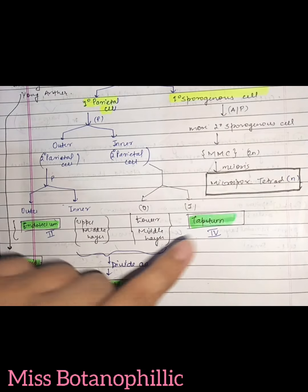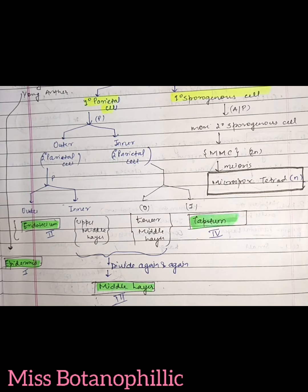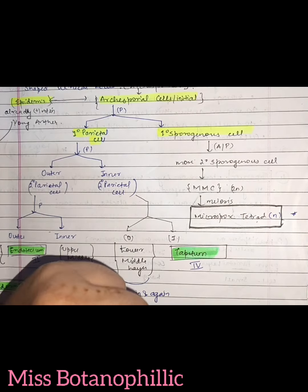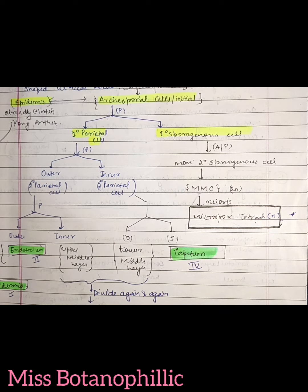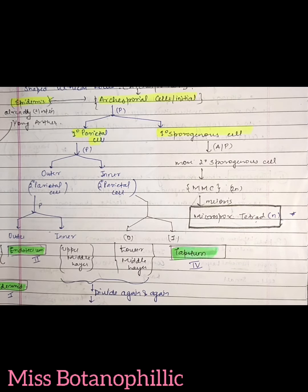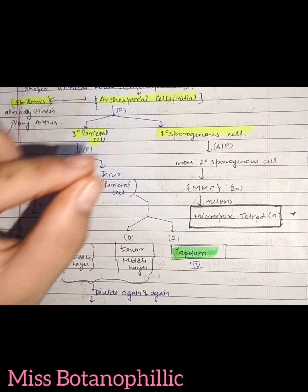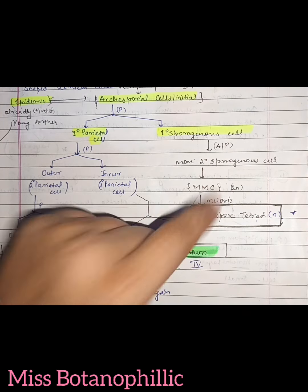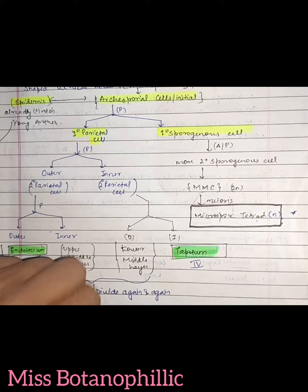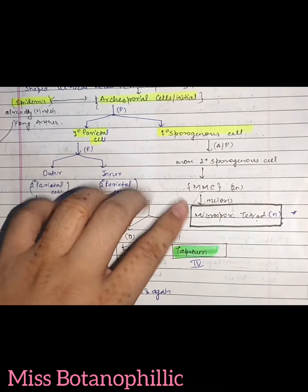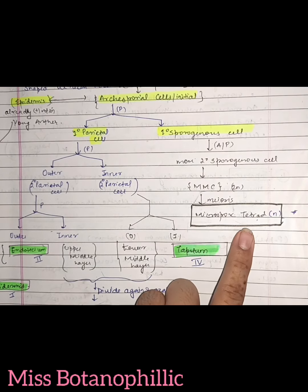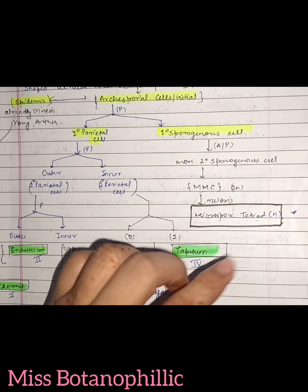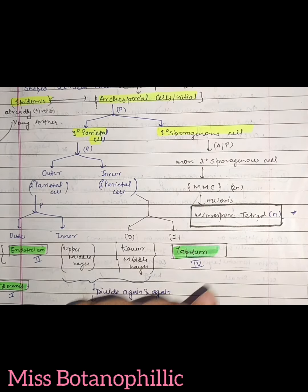Now we are going to study what happens to the primary sporoginous cell in the mature anther. The primary sporoginous cell undergoes anticlinal and periclinal divisions to form secondary sporoginous cells. The secondary sporoginous cells divide again and again by mitosis, also called equational division, to form the microspore mother cell (MMC), also called the pollen mother cell, which is diploid in nature. Then meiosis occurs, forming a microspore tetrad which is haploid in nature. The microspore tetrad means four microspores present in a group, which then separate.